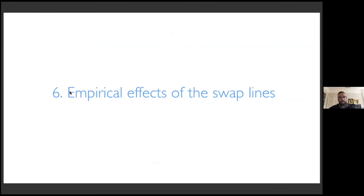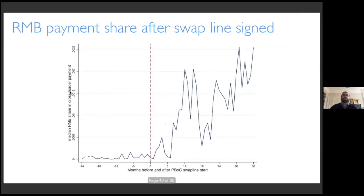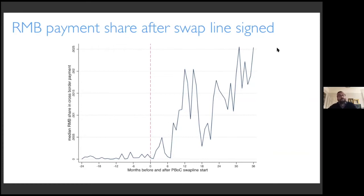As a result, we focus on non-rich countries where there can be real-sector trade finance, and we focus on the extensive margin — do you start using the RMB at all? Here is the graphical picture: the median RMB share in cross-border payments in months before and after countries sign a PBOC swap line. For the 38 countries that signed: you didn't use the RMB, you sign a swap line, you start using the RMB. The effect seems persistent — if anything, gradual and delayed, with a clear extensive margin switch around the signing date. If you're a graphical person, that is the empirics.